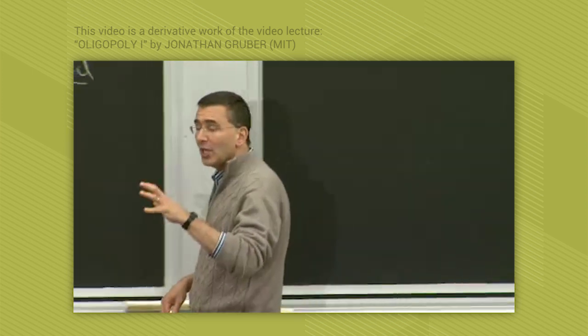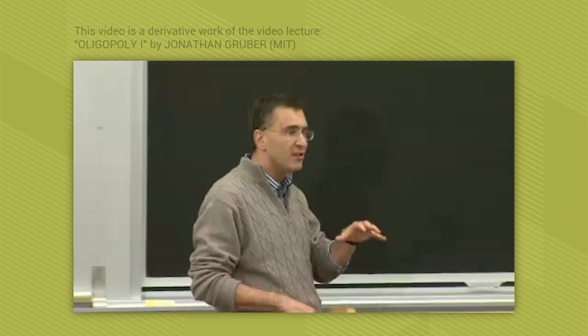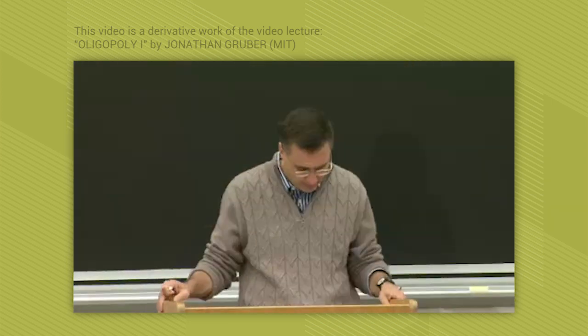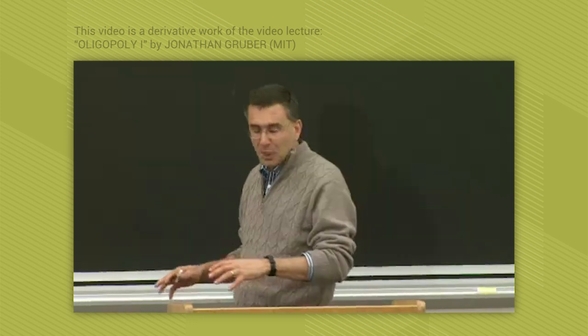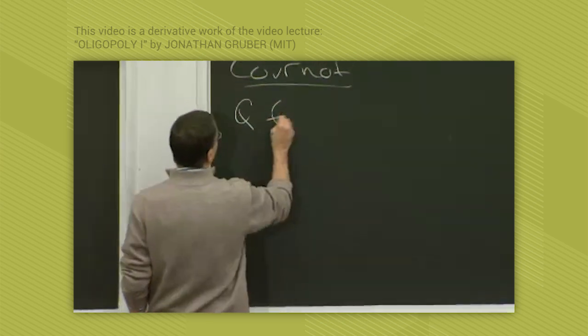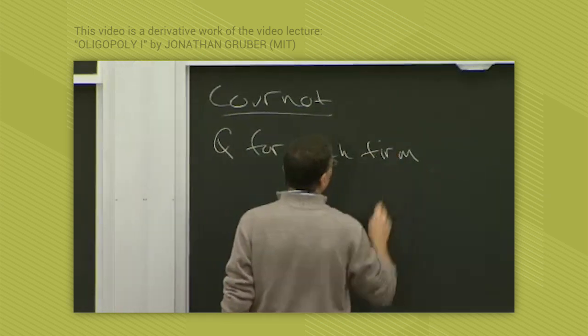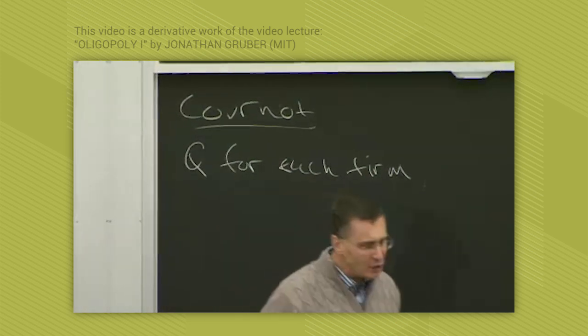The way we figure this out is by looking for the Nash equilibrium in this case, which we also call Cournot equilibrium. Basically we choose the quantity for each firm, the quantity for each firm is chosen, the quantity is chosen by each firm,